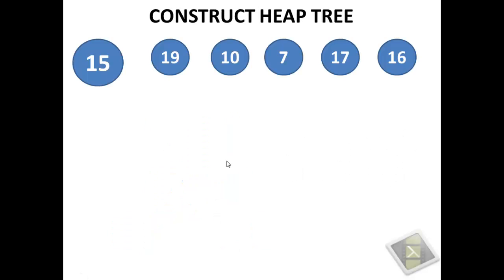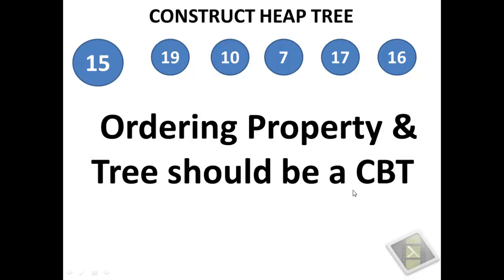Before we start the construction of the heap tree, keep in mind two properties that should always be satisfied by any heap tree. First being ordering property and second is tree should be a CBT. Now, what do you mean by ordering property?